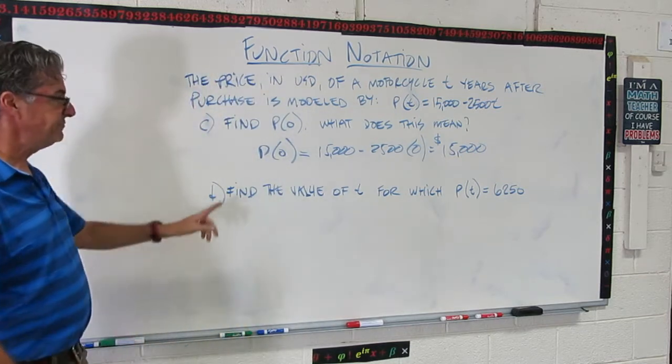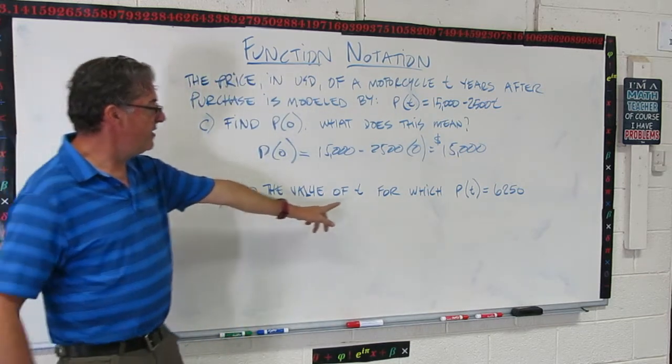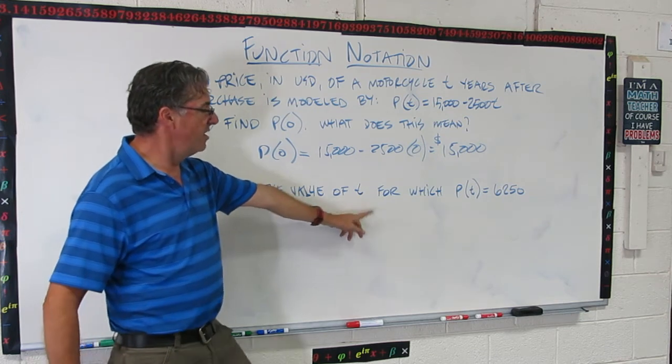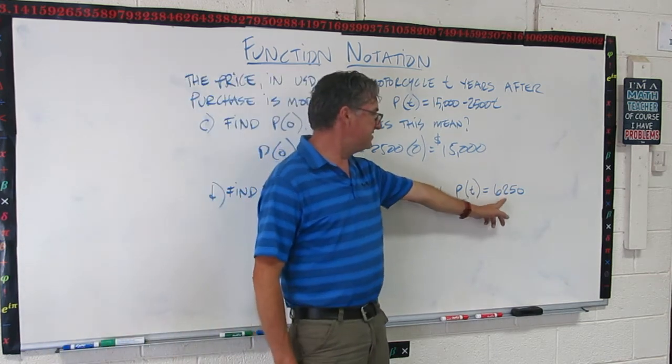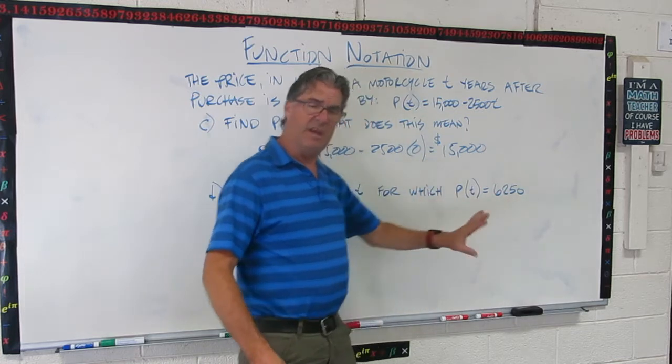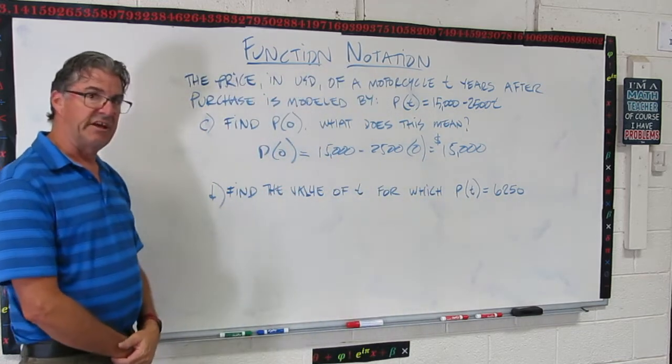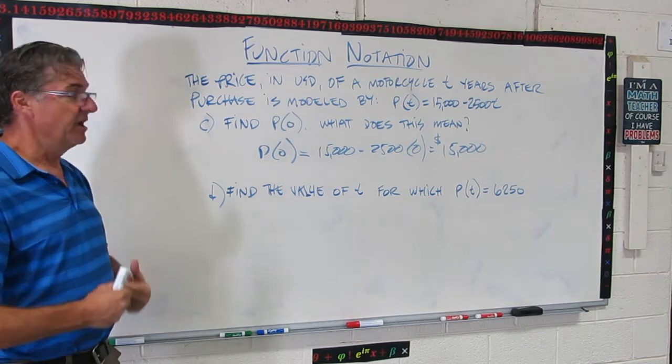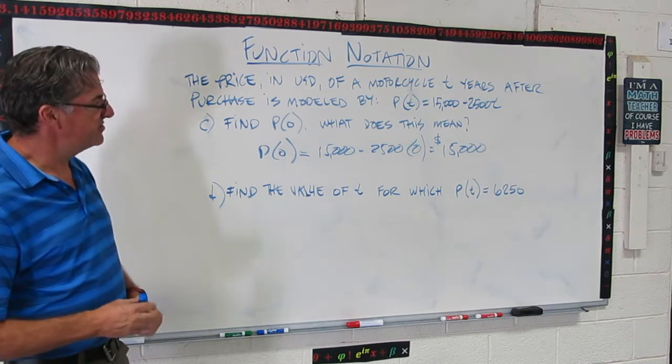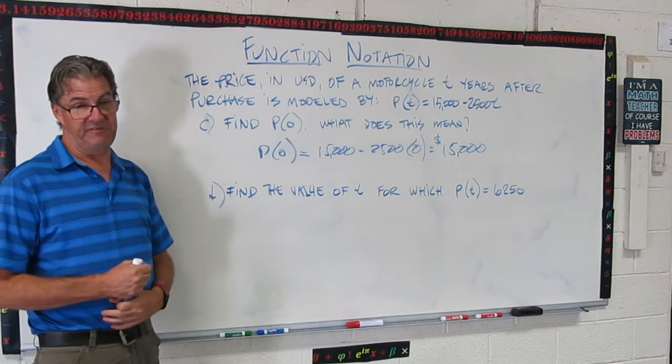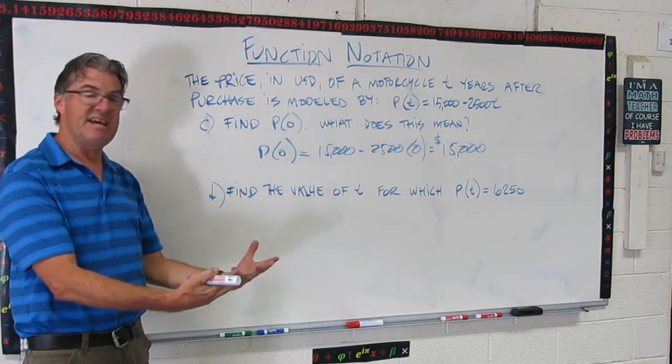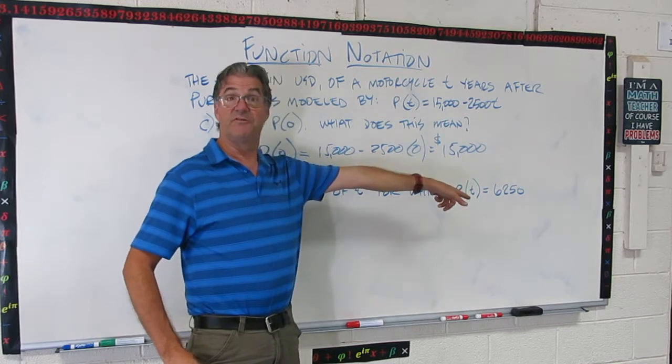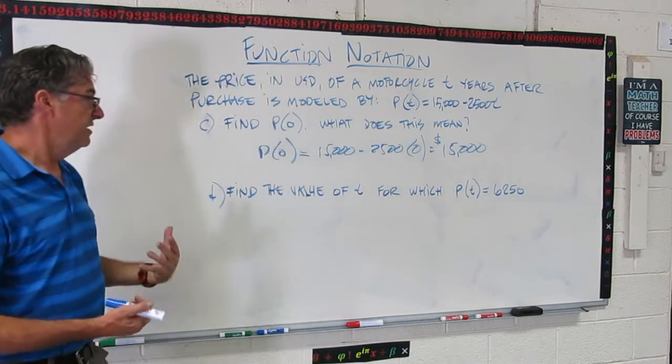Now let's go on to the next one. Find the value of t, so what time, what is the value of time, for which p(t) is 6250. So think a minute, what is that question asking? It's asking, when is the motorcycle worth 6250? In other words, how much time does it take for the motorcycle to drop from this 15,000 to 6250? So, check this out.